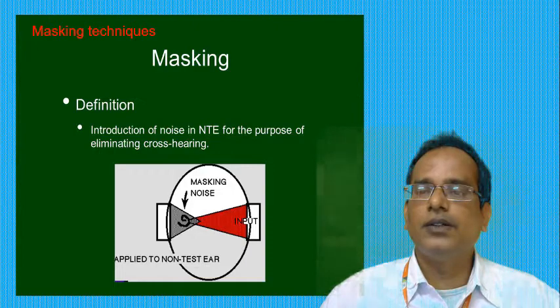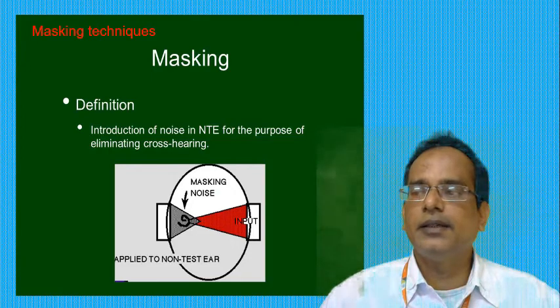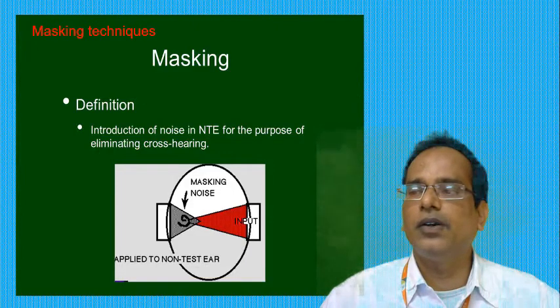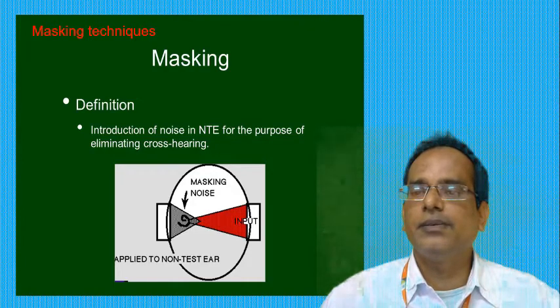So when to do masking? Bone conduction testing in a person with hearing loss should be done with masking to prevent the sound from the stimulated side from going over to the good side. Air conduction testing should be done when there is a 40 dB or greater threshold.